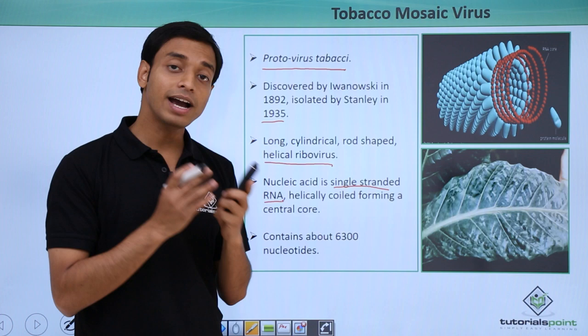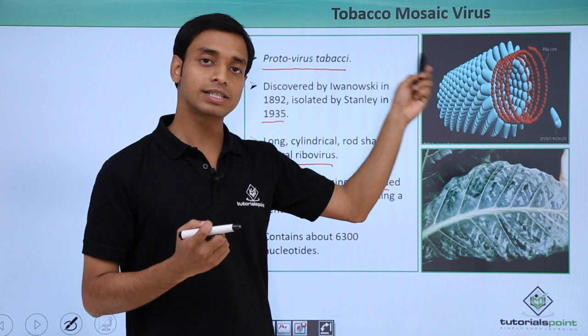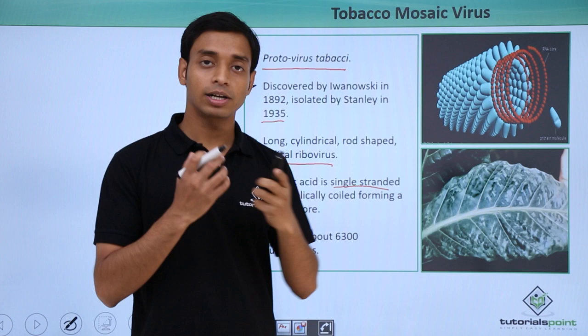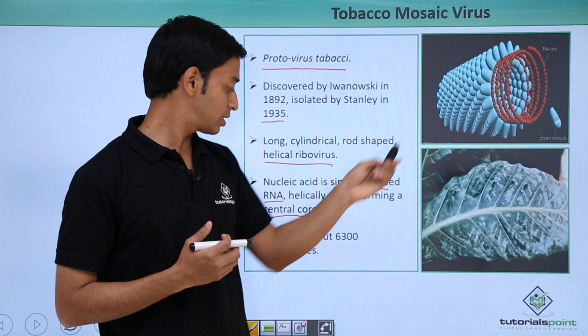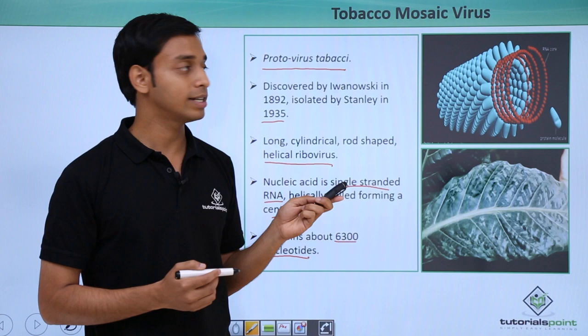The nucleic acid of the TMV virus is single-stranded RNA, which is also helically coiled. As you can see, this single-stranded RNA is the genetic material of these viruses, and it remains as a helical structure inside the cylindrical core at the center of the virus.